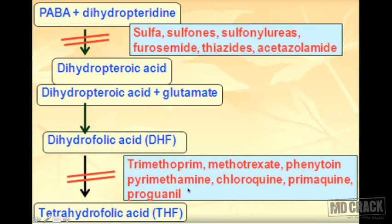The second step — DHF to THF — is inhibited by trimethoprim, methotrexate, phenytoin, and anti-malarial agents such as pyrimethamine, primaquine, and proguanil. Integrating this with what was said about phenytoin and methotrexate toxicity, you can see why there is folic acid deficiency and how it relates to their toxicity.